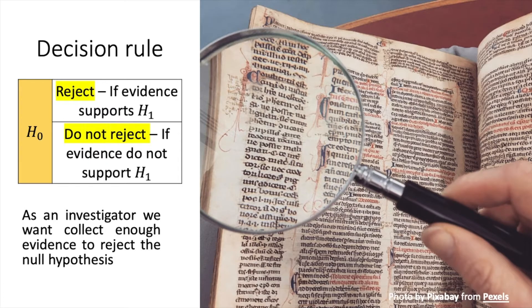It's either we reject the null or we do not reject the null. So we reject the null if evidence supports your H1, and we do not reject the null if evidence do not support H1.